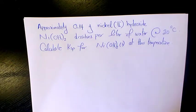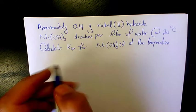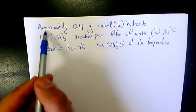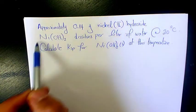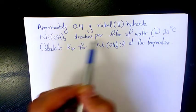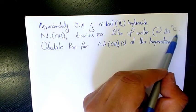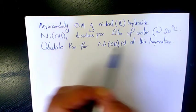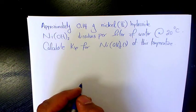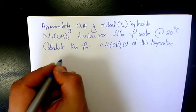What's up guys, this is Massey. Welcome to another video. In this video I want to show you how to find the Ksp of a solid from its solubility. It says: approximately 0.14 grams of nickel(II) hydroxide, Ni(OH)₂, dissolves per liter of water at 20 degrees Celsius. Calculate Ksp for Ni(OH)₂ at this temperature.